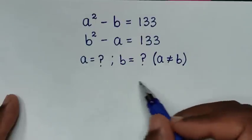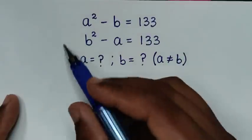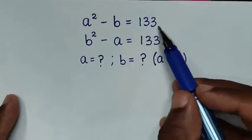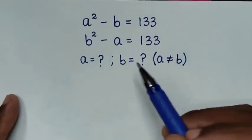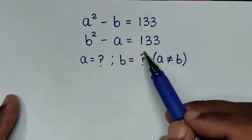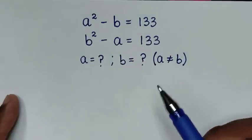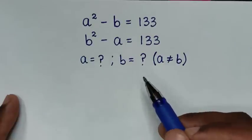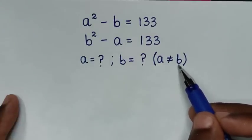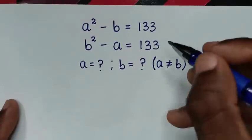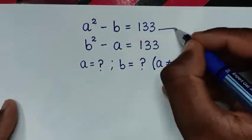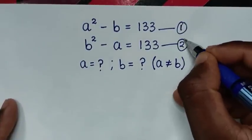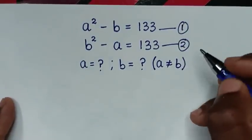Hello, you are welcome to solve this math problem: a squared minus b is equal to 133, and b squared minus a is equal to 133, to find the values of a and b such that a is not equal to b. We'll label these as equation 1 and equation 2.